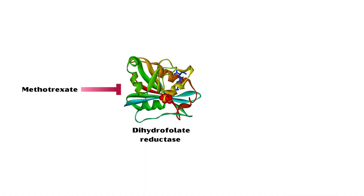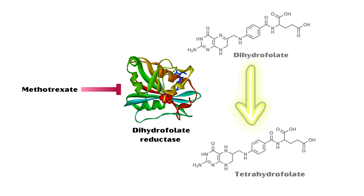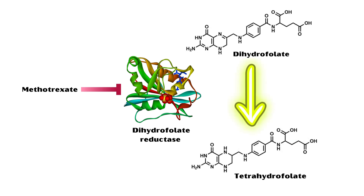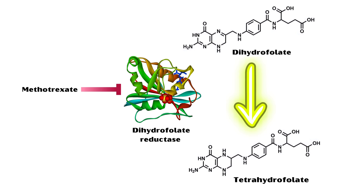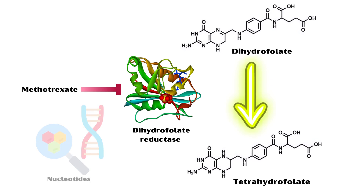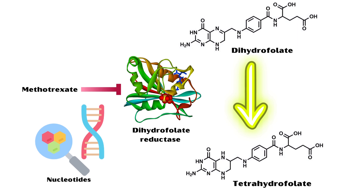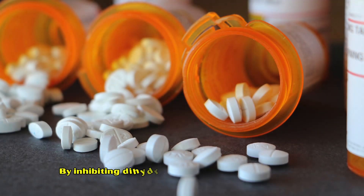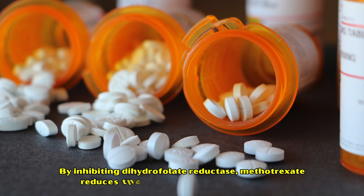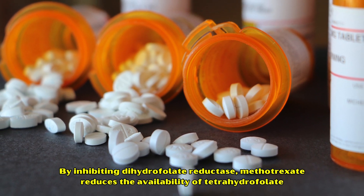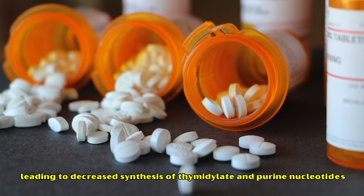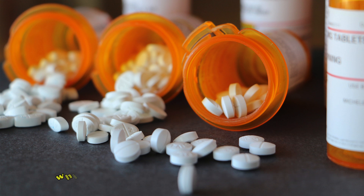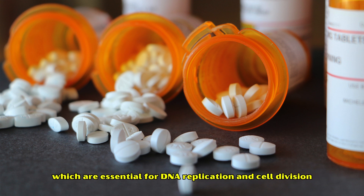Methotrexate exerts its effects primarily by inhibiting the enzyme dihydrofolate reductase, which is crucial for the conversion of dihydrofolate to tetrahydrofolate — a folic acid derivative necessary for the synthesis of nucleotides, the building blocks of DNA and RNA. By inhibiting dihydrofolate reductase, methotrexate reduces the availability of tetrahydrofolate, leading to decreased synthesis of thymidylate and purine nucleotides, which are essential for DNA replication and cell division.